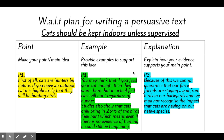The examples you provide to support this idea are: 'You may think that if you feed your cat enough they won't hunt, but in actual fact cats will hunt regardless of hunger. Studies also show that cats only bring in 25% of the birds they hunt, which means even if there is no evidence of hunting, it could still be happening.'